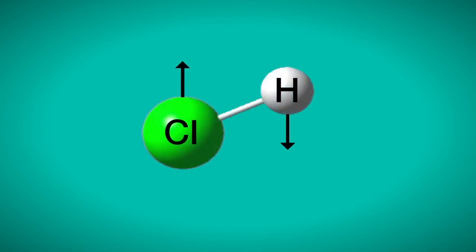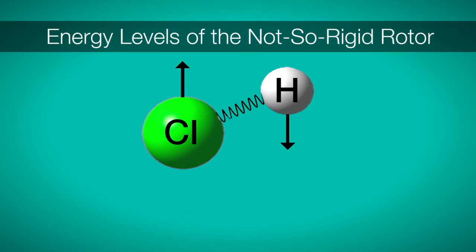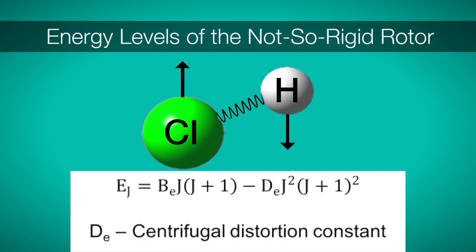The rigid rotor is a simple model for rotations of a molecule, but there's a problem. Bonds are not rigid. This means we have to refine our model. In reality, bonds act similar to springs, so let's replace our rigid bond with a spring. By making this change, we also change the energy expression for our system. To account for the flexibility of bonds, we add the centrifugal distortion correction. Our refined expression is shown here, where D_E is the centrifugal distortion constant.